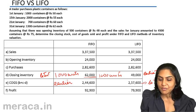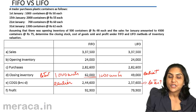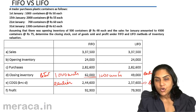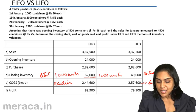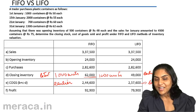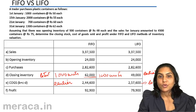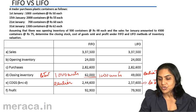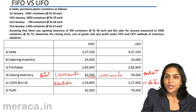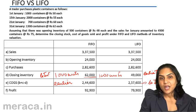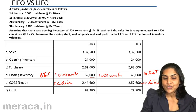Therefore, under situations of rising prices, FIFO gives us higher profits and LIFO gives us lower profits. FIFO gives us greater closing inventory, while LIFO gives us lower closing inventory. FIFO gives us lower cost of goods sold in inflationary conditions.